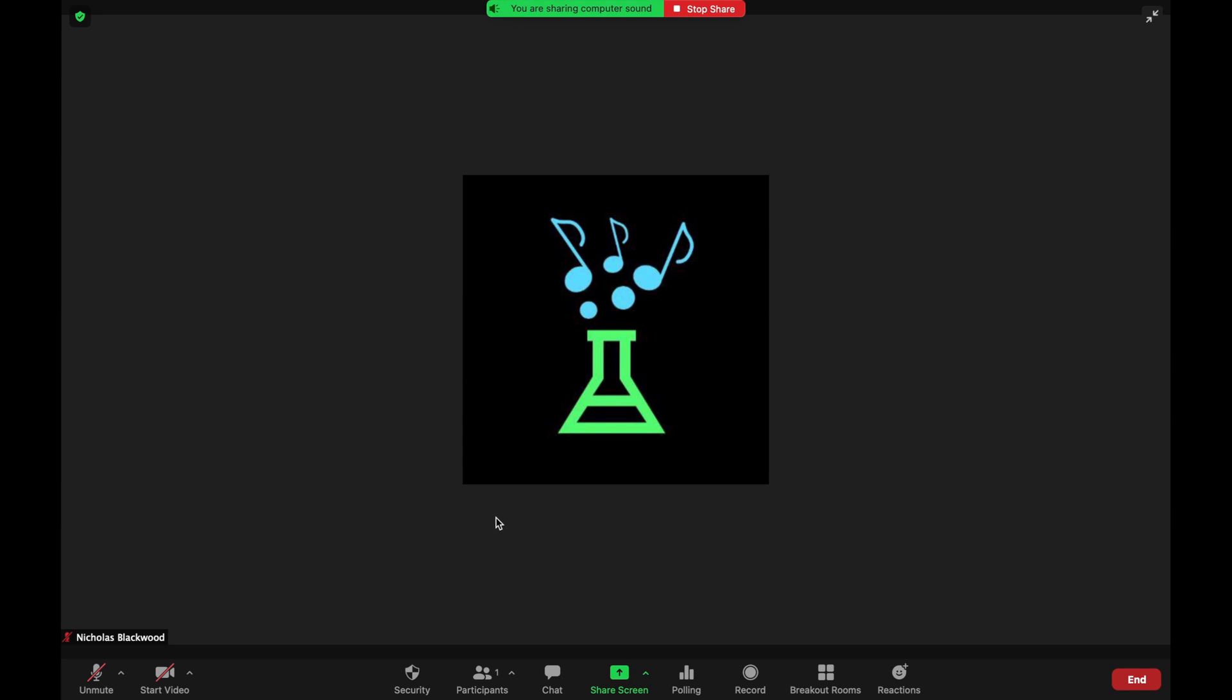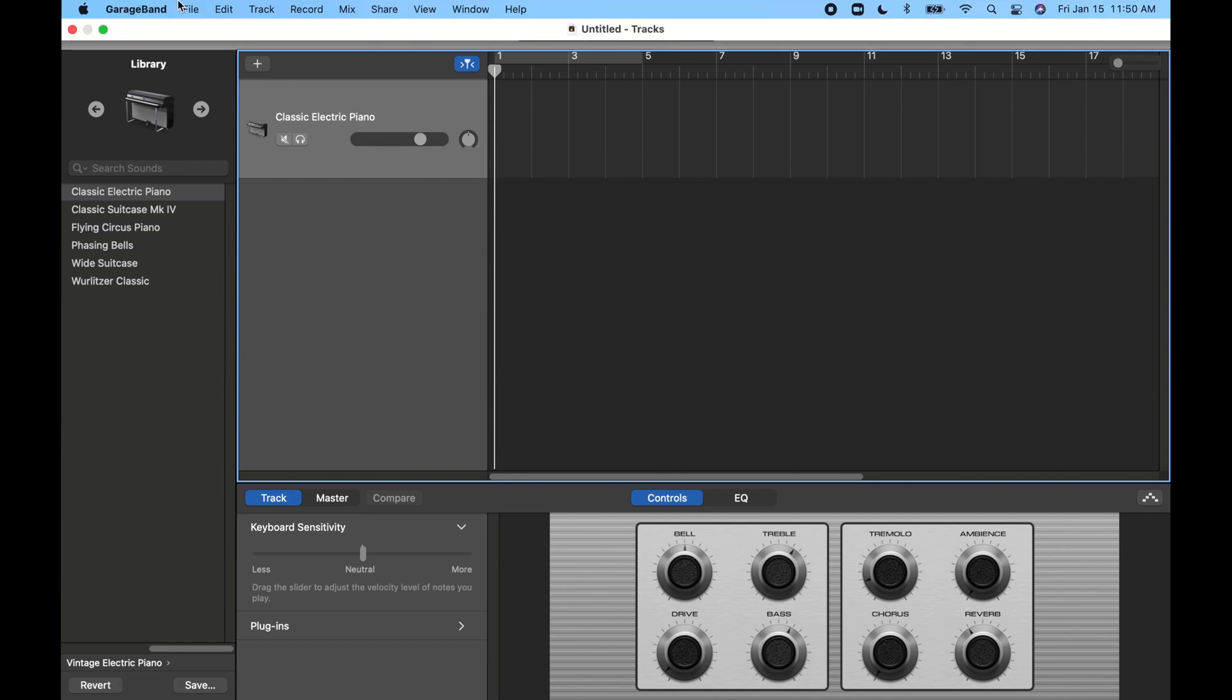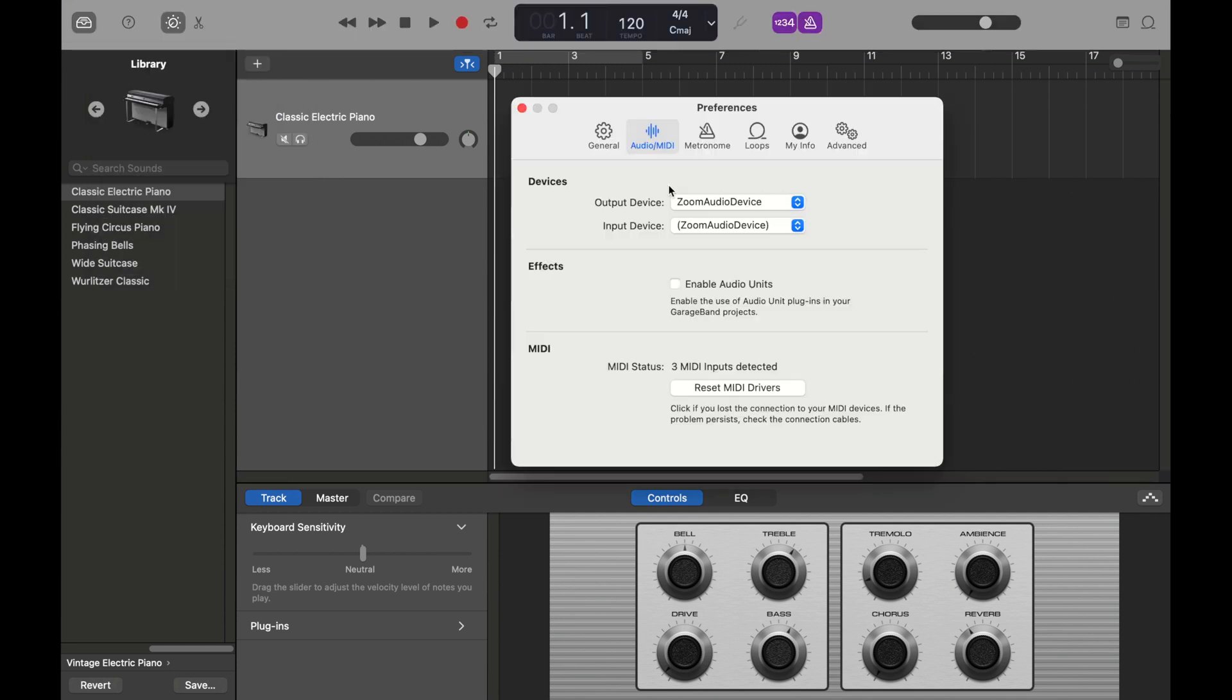Next, we're going to go over to GarageBand and we're going to make sure that it is set up. I have my electronic piano here and I'm going to go to my preferences and go to your audio MIDI tab. We're going to make sure that this is going through our output device to Zoom instead of your speakers. If you have it set up to your speakers, it'll play through your computer, but it will not go to Zoom. We want to make sure that our Zoom audio device is selected as the output. It's going to send the signal from GarageBand to Zoom.